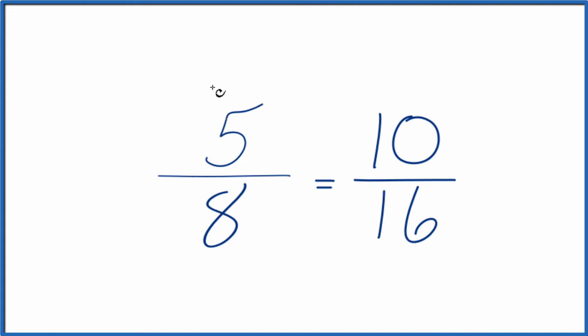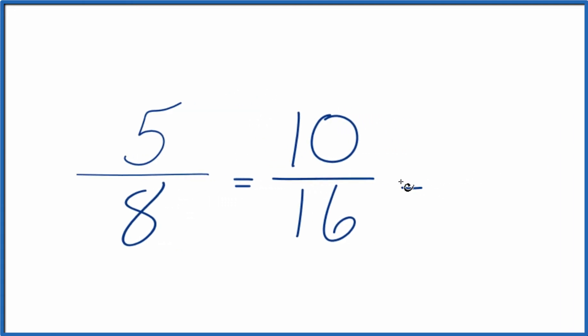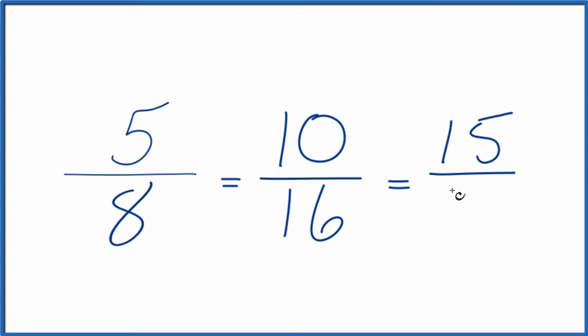We could multiply 5 by 3 and 8 by 3. 5 times 3 is 15, 8 times 3 is 24, another equivalent ratio.